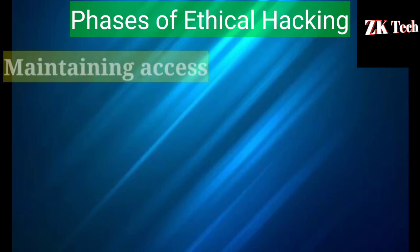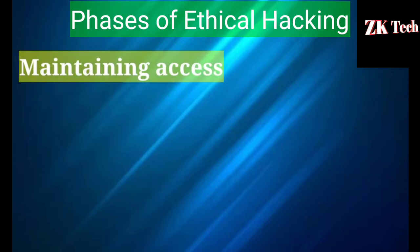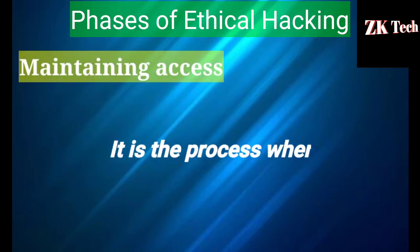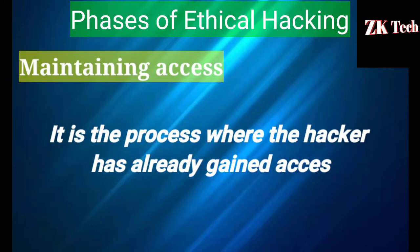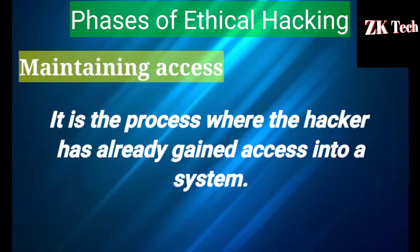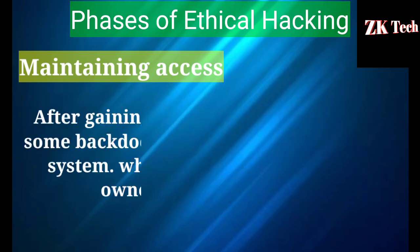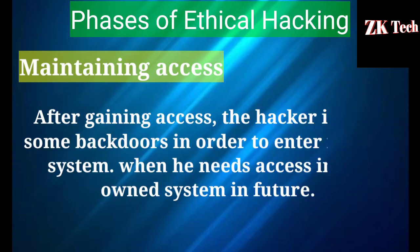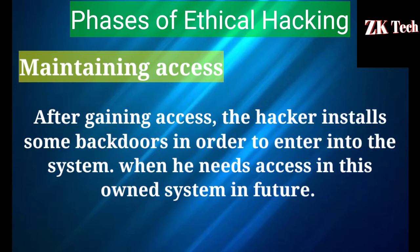The fourth phase of ethical hacking is maintaining access. This is the process where the hacker has already gained access into the system. After gaining access, the hacker installs some backdoor tools in order to re-enter the system whenever he needs access in the future.